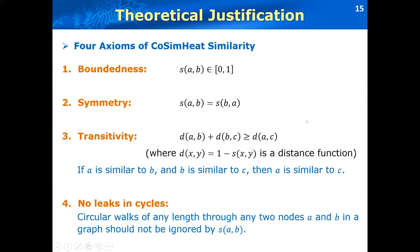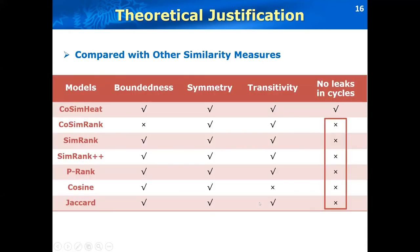And the last property of cosine heat is that there are no leakages in cycles. We have theoretically proved these similarities in our paper. But as compared with other similarity measures that comes from the same rank families and other Jaccard-like cosine similarities, we can see that for most of the models, they cannot satisfy the last property.